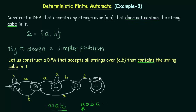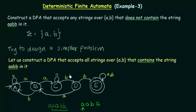Now what is left? Our final state E is left. When we reach state E, we already got the sequence A, A, B, B. Now it does not matter what we get after that — either A or B, it stays in the final state. That completes our DFA which accepts all strings over AB that contains the string AABB in it.